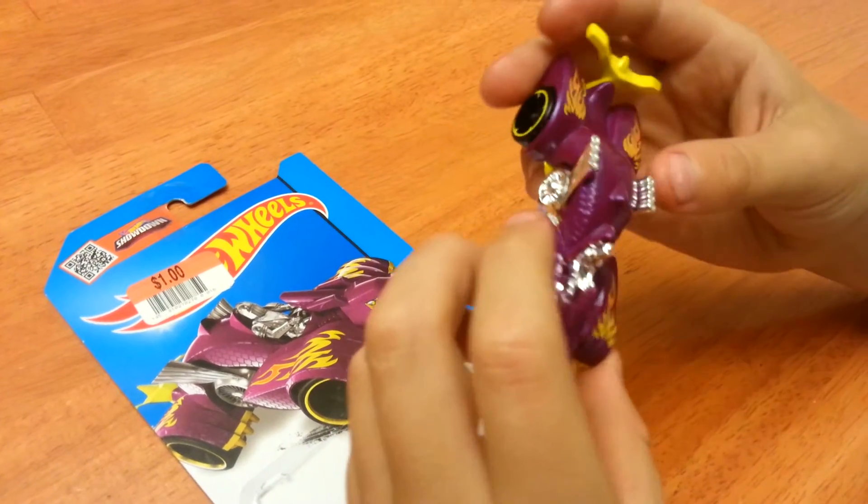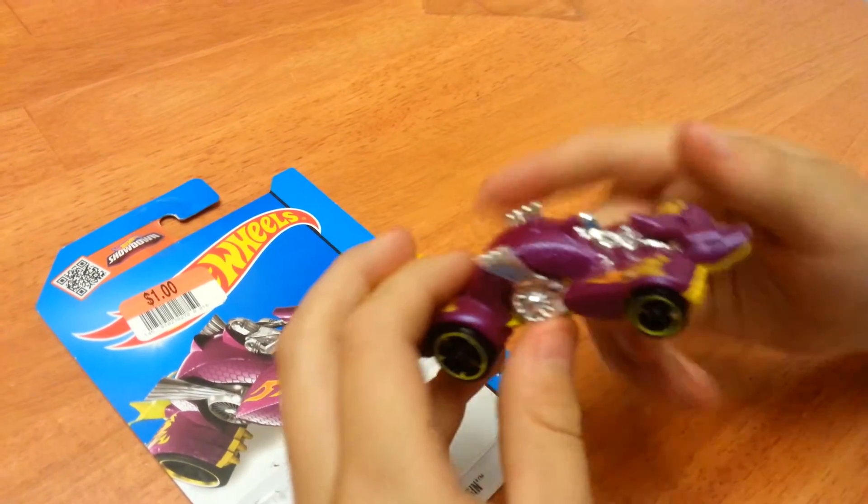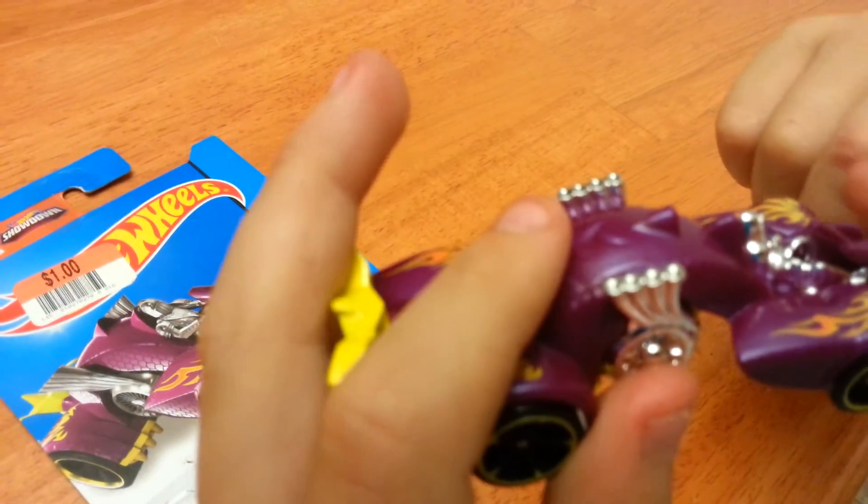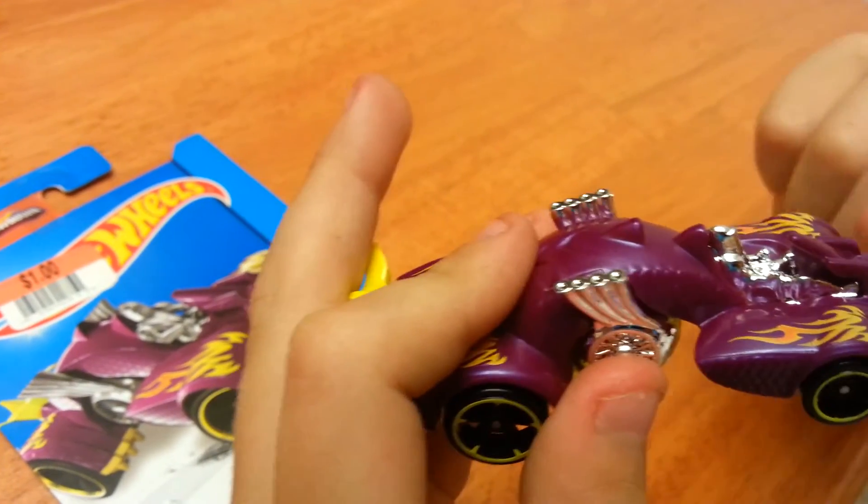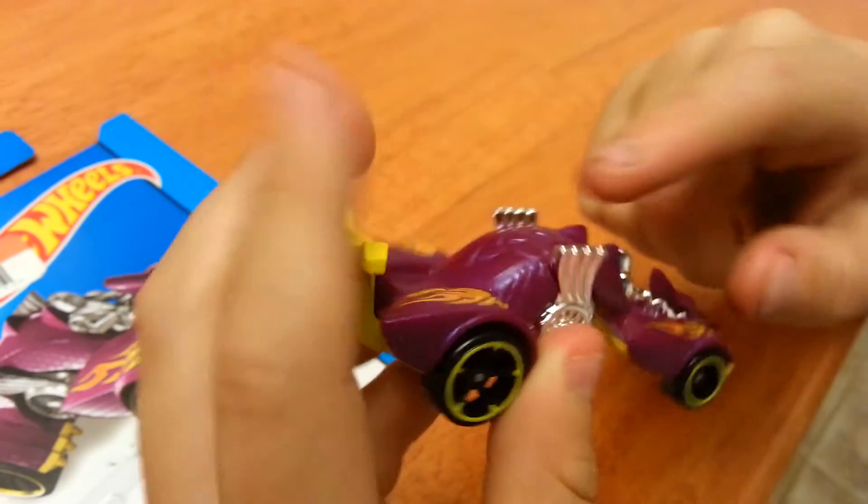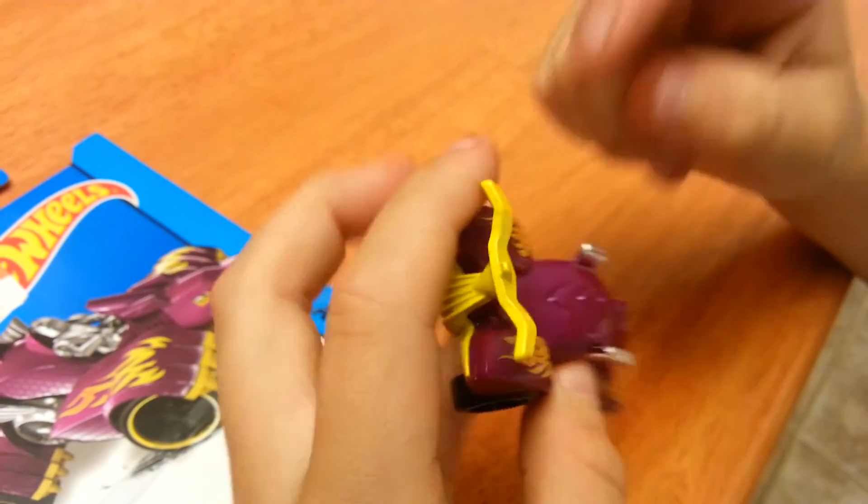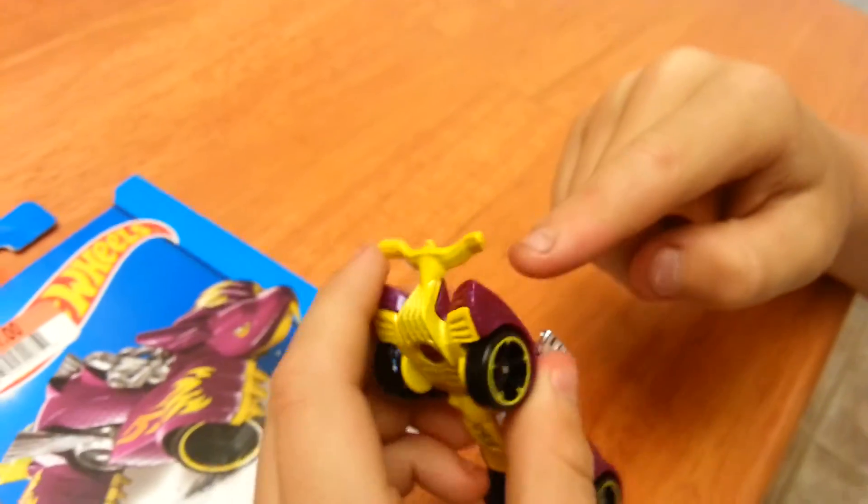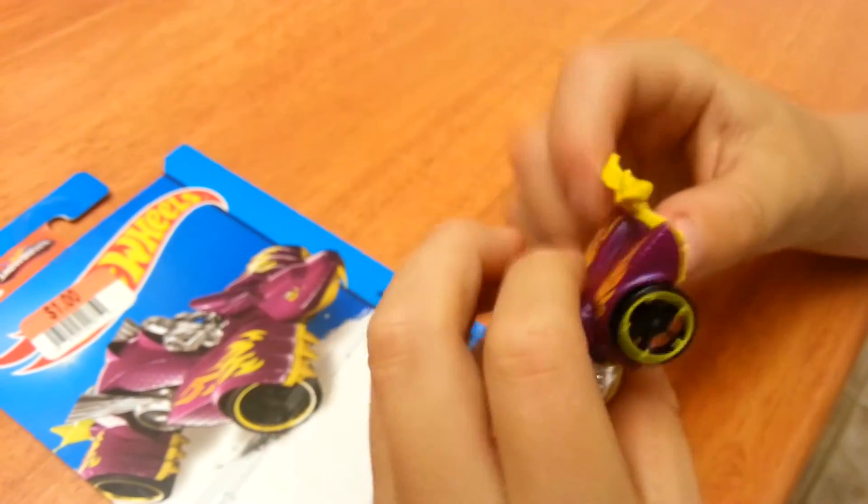But as you can tell, this is a dragon. There are claws right here. There's the head. Here are the claws and the hands. The back is curved over the turbine. Here is the tail. And these are the back feet.